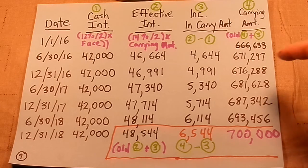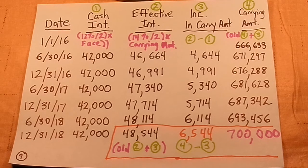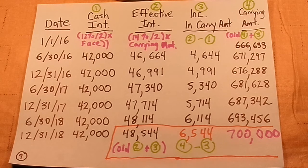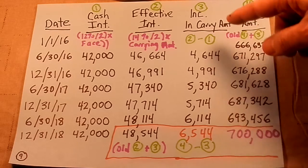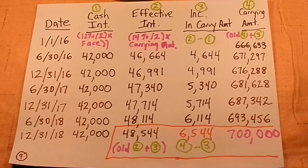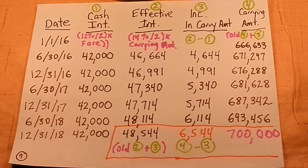Every six months we're going to do a journal entry to record these items. No matter how complicated a spreadsheet is in accounting — all the way up to advanced accounting — you're always trying to figure out journal entries; that's why you do spreadsheets. Notice that in every case the carrying amount is going up and the effective interest is going up, which shouldn't surprise you because the carrying amount is increasing toward $700,000.